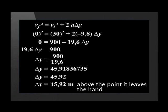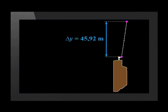We calculate displacement, so the unit is meters. The answer is positive, which means upward — above the point the ball leaves the hand. So the maximum height this ball reaches is 45.92 meters above the point it leaves the thrower's hand.